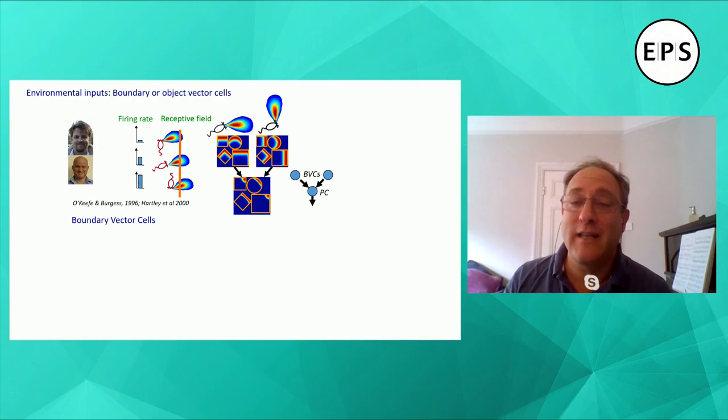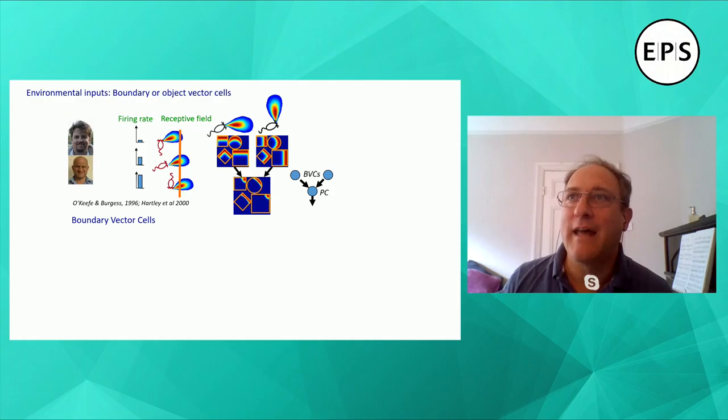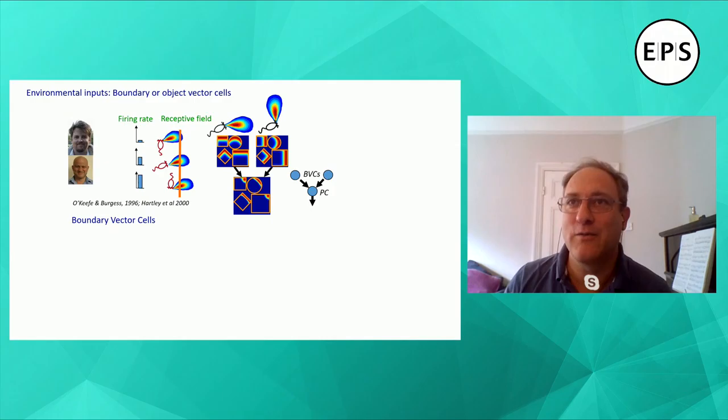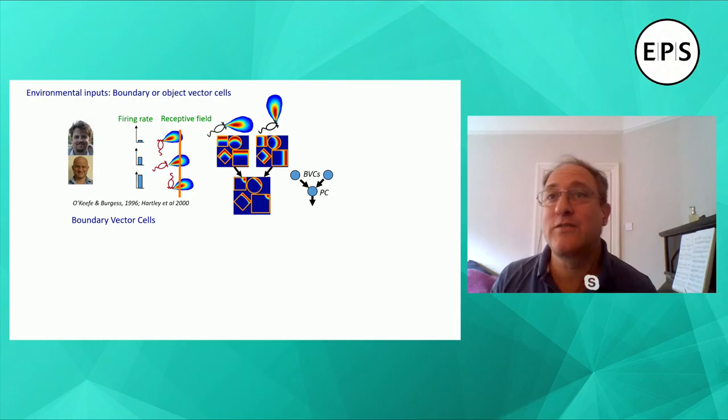Adding those inputs together would make the place cell fire in the northeast corner across different shaped boxes. Many years later, Colin Lever found these cells existed in the subiculum of the hippocampal formation. There's a nice example showing the cell fires whenever, as the animal explores, there's a wall about 15 to 20 centimetres to the south — and also when a row of wine bottles creates a second barrier.